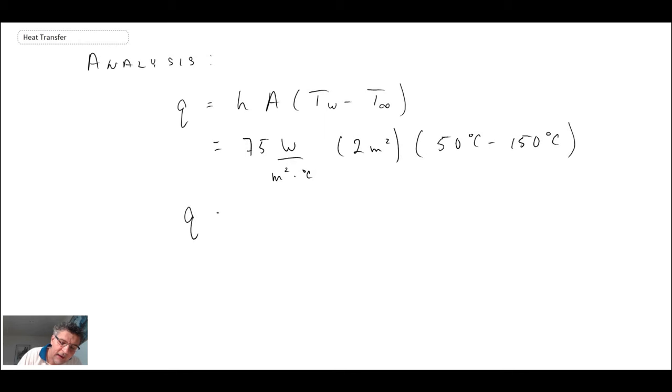So we get that. When you calculate everything, we get 15,000 watts or 15 kilowatts. And given that we have a 50 minus 150, that's actually a negative. So it's a negative value.